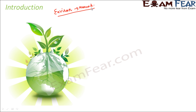Everything around us — the air, water — everything is part of the Environment. How do we want our Environment to be? We want a green planet, as you can see on the screen: a green planet with clean air to breathe, clean water to drink, and clean and fresh food to eat. That is how we can all stay healthy.